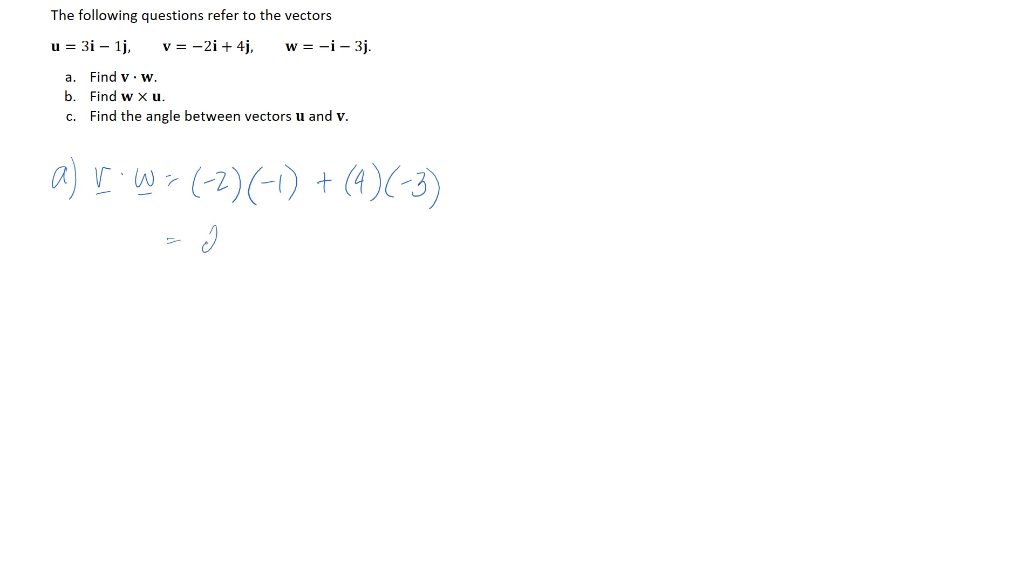So if we simplify this this is going to go to two and this is going to go to negative twelve. So overall we end up with an answer of negative ten and we can see that this is like a scalar or just a number which is why the dot product is sometimes also called the scalar product.